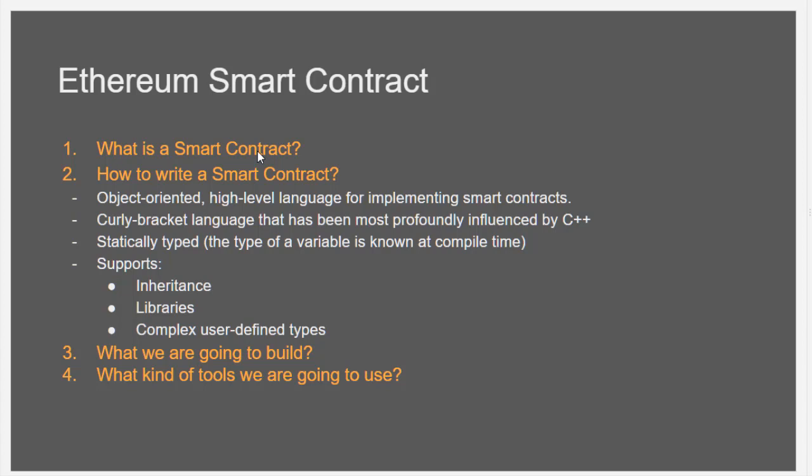But before that, what is a smart contract? It is simply a program that runs on the blockchain. We can write logic, functions, and store data inside it. This program resides at a specific address on the Ethereum blockchain. Smart contracts are a type of Ethereum account, so like our simple account they have a balance.